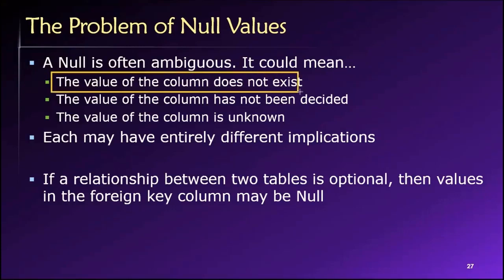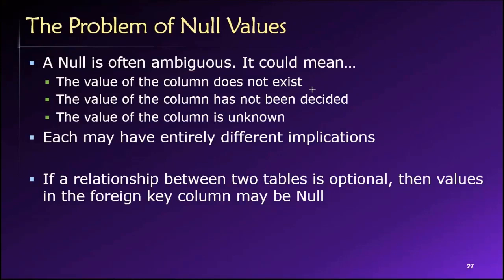One possibility is that the value does not exist. In the system we use in the United States for street addresses, sometimes there is a second line on somebody's street address. So maybe you live at 123 Madison Avenue — that's the first line. The next line might be apartment 4B or unit 17. This second line is there to be used as necessary, but many addresses don't require a second line.